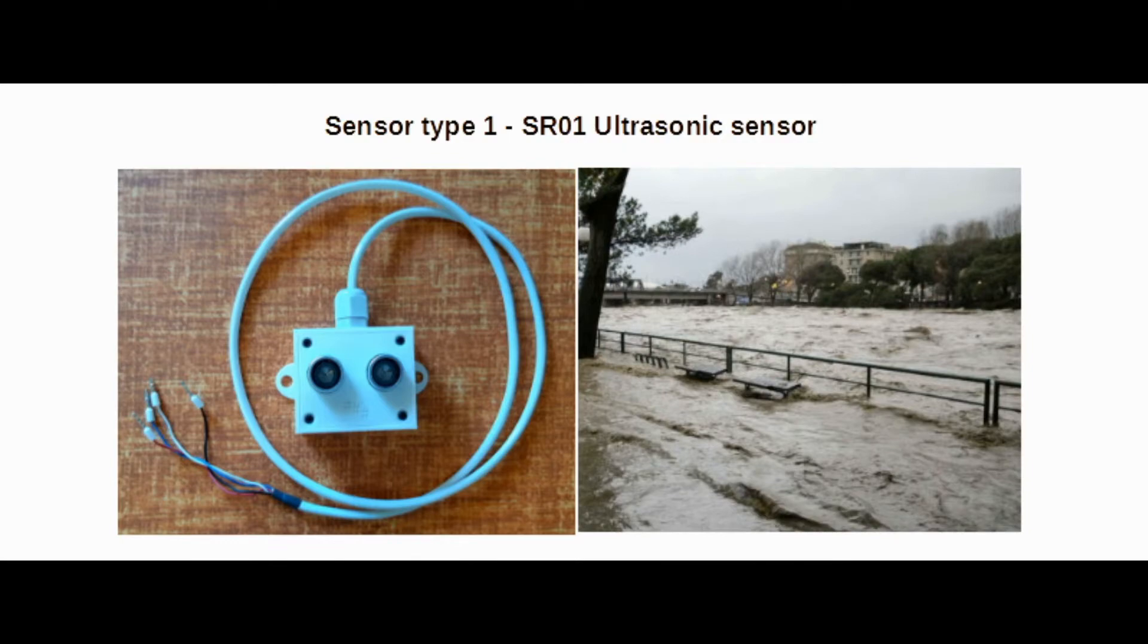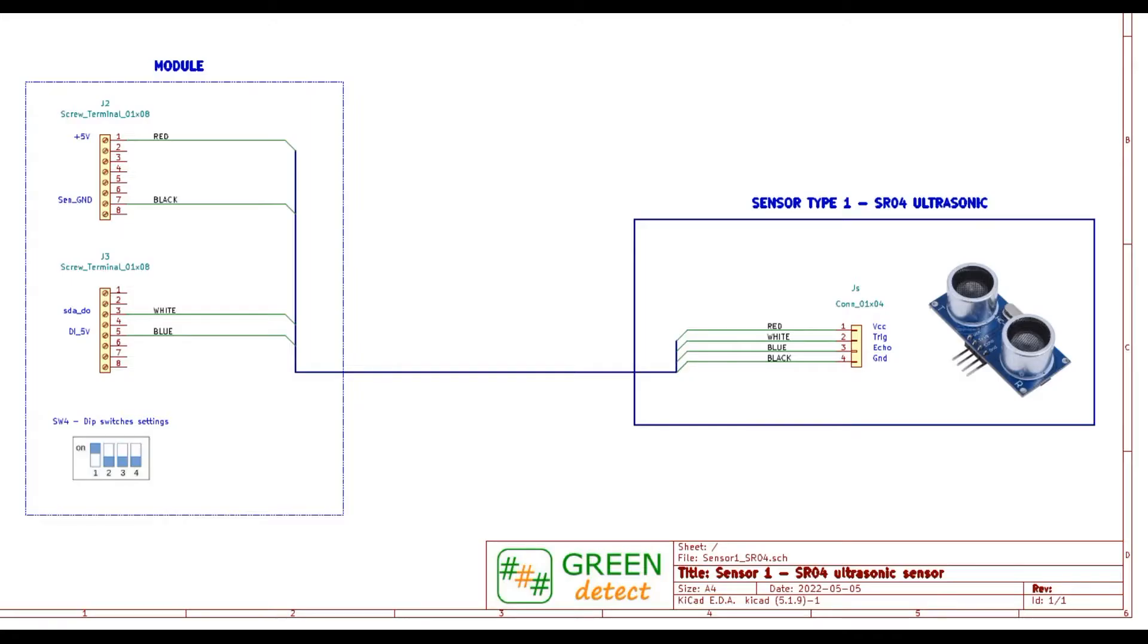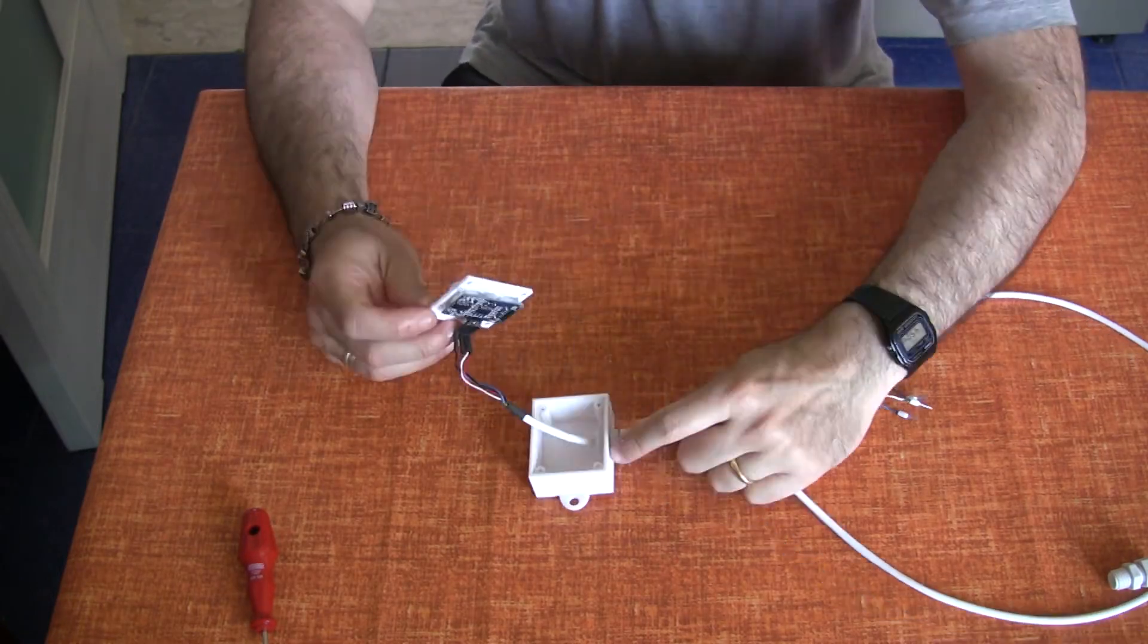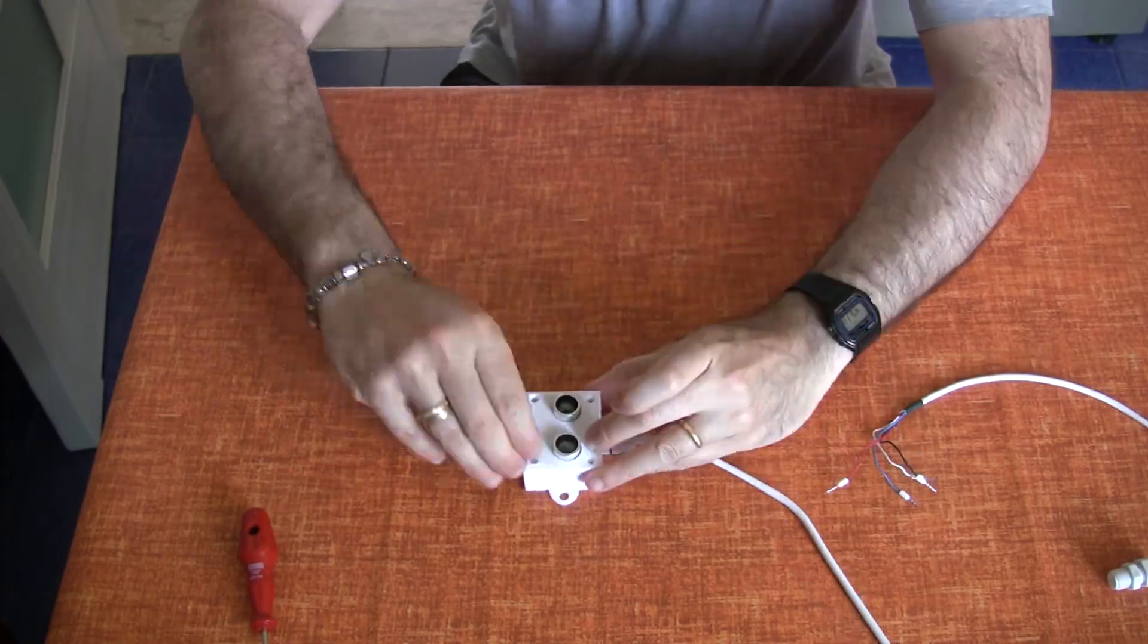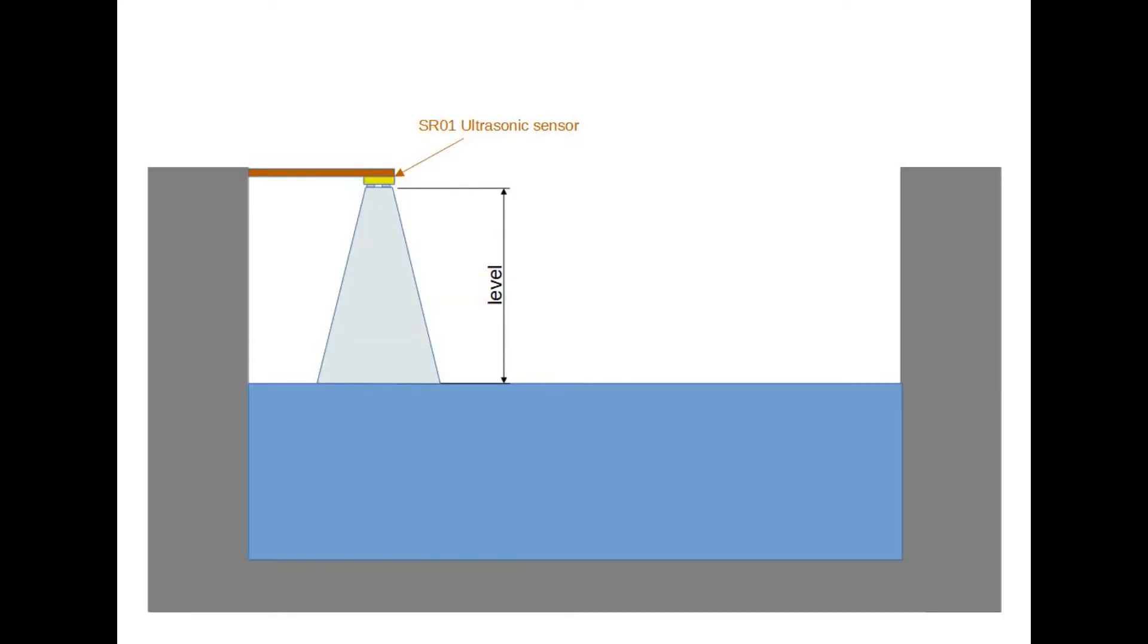Sensor type 1: SR01 ultrasonic sensor to measure distance in centimeters. This sensor was chosen to measure the level of a river and prevent any flooding. It can measure a distance of up to 4 meters.